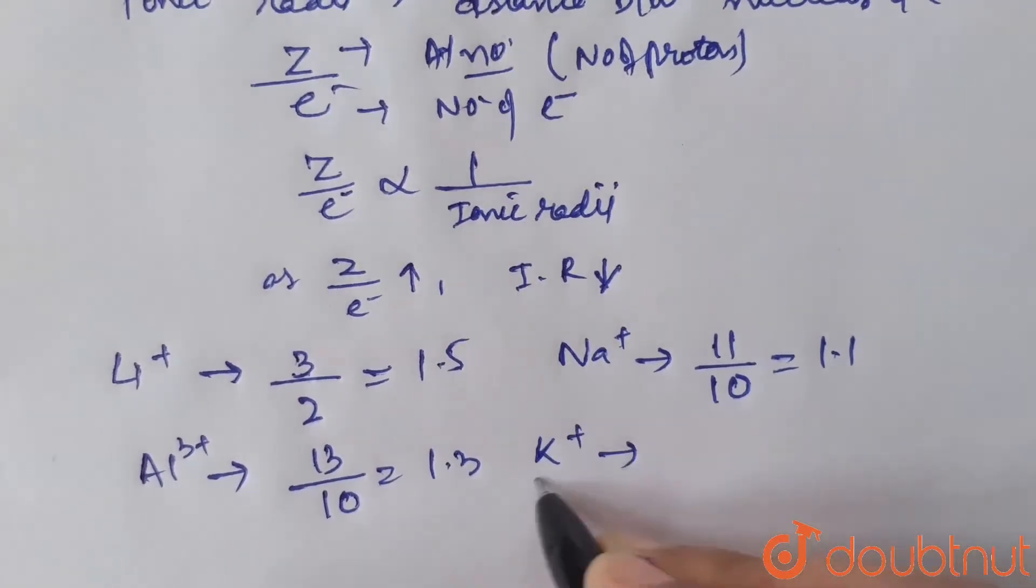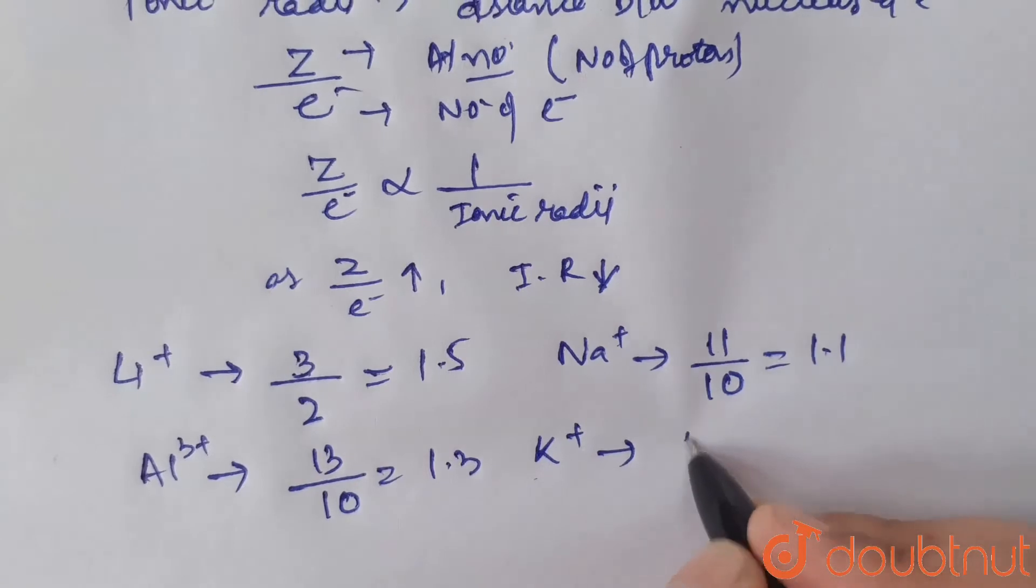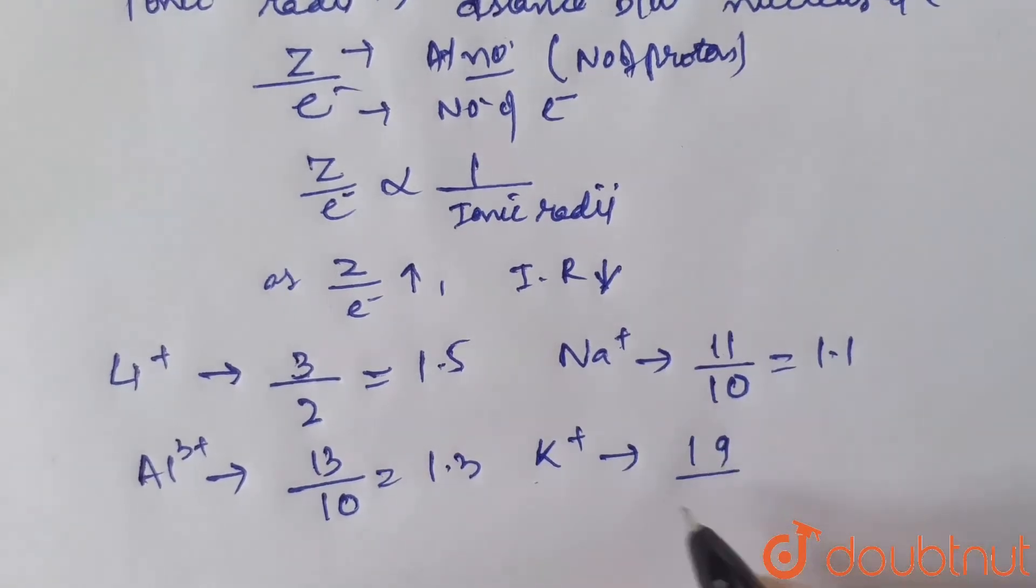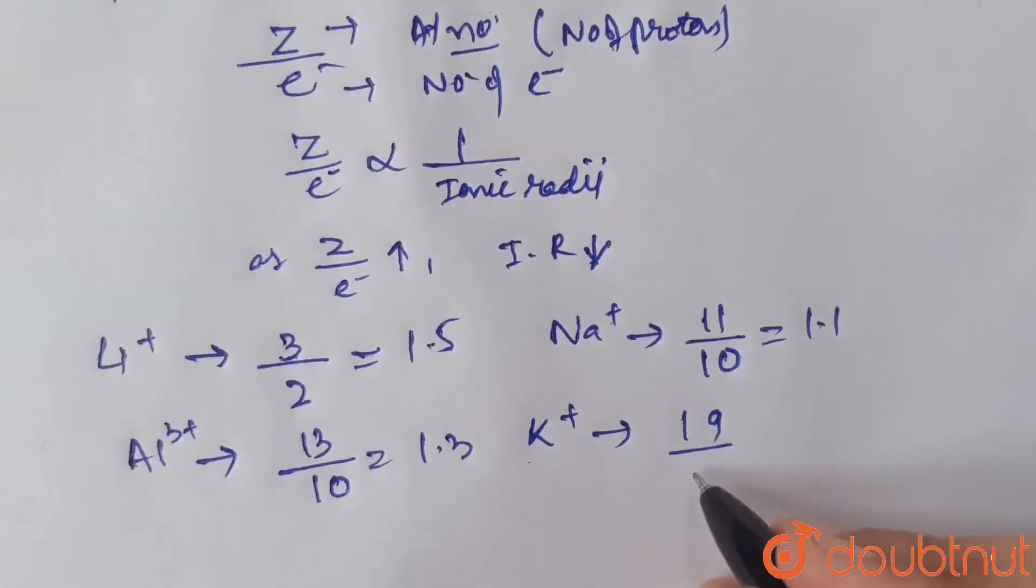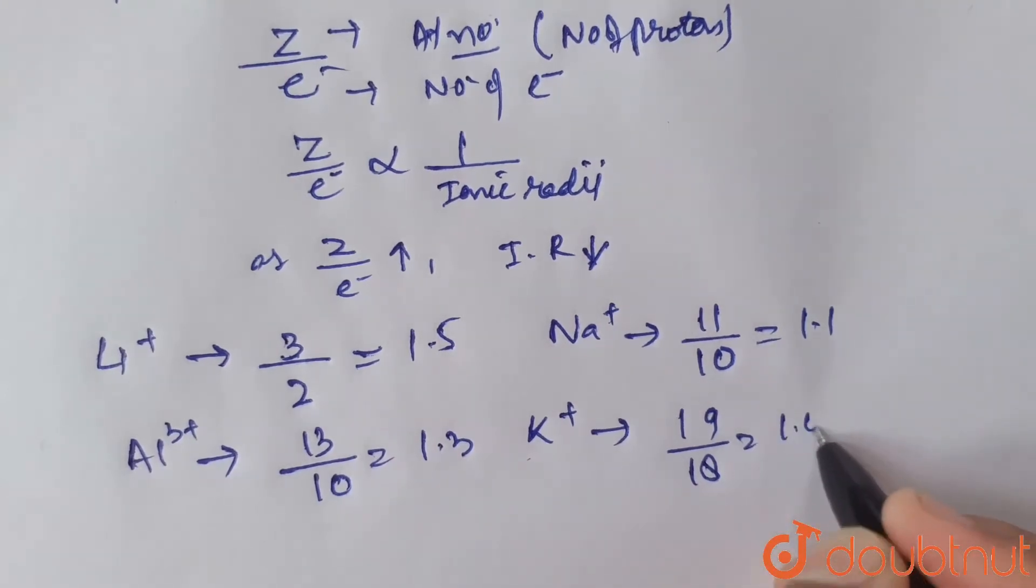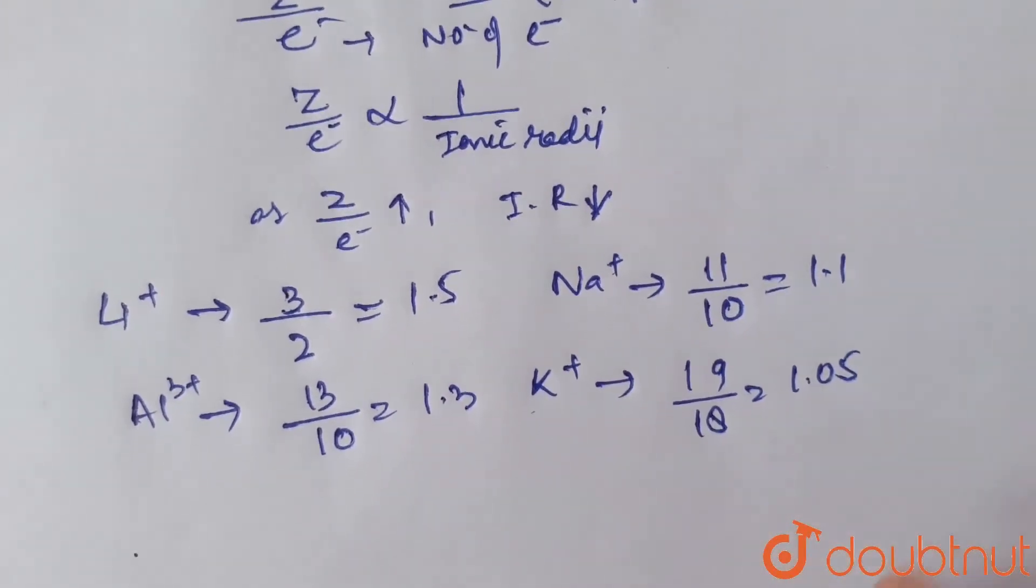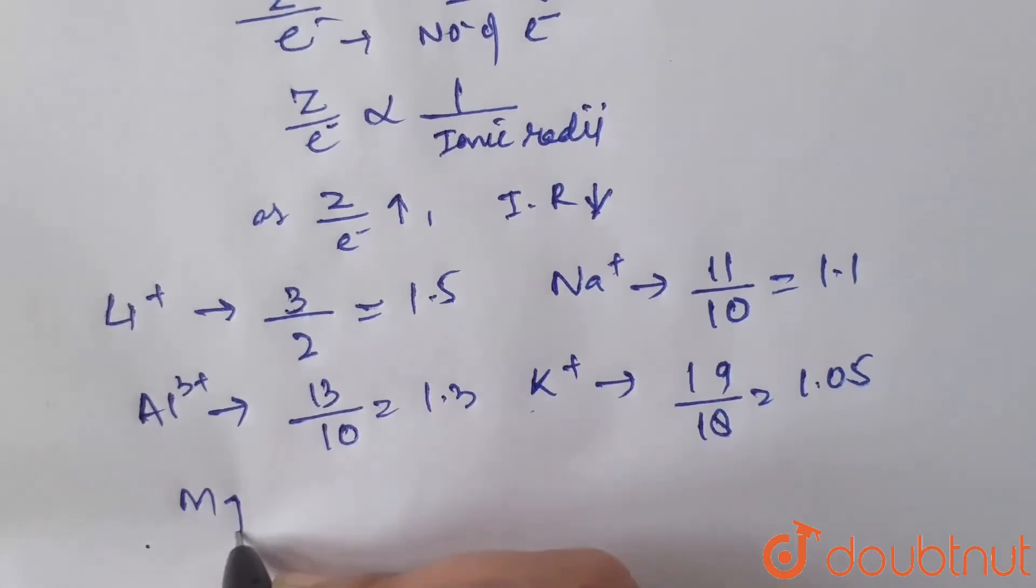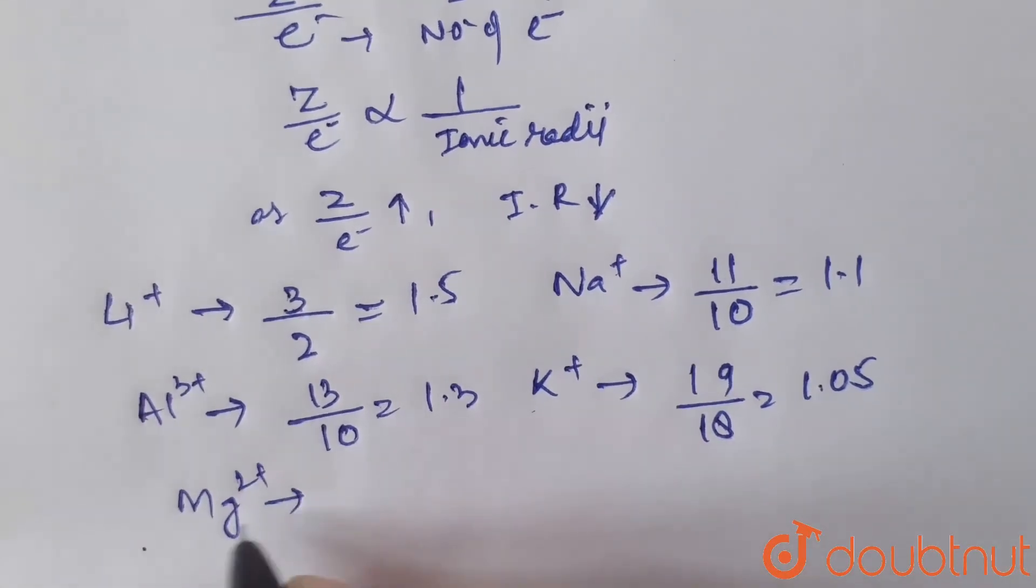Then K+, potassium. It has atomic number 19. As it's K+, it has lost one electron, so the number of electrons are 18. The ratio becomes 1.05.